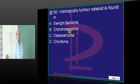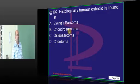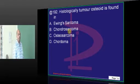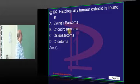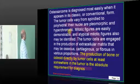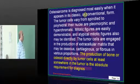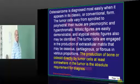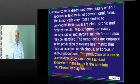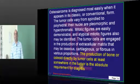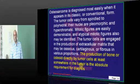Osteoid - histologically tumor osteoid, where do you find it? Osteosarcoma. Very good. Bone or osteoid produced directly by the tumor cells, at least somewhere in the tumor, is the absolute requirement for you to diagnose osteogenic sarcoma.